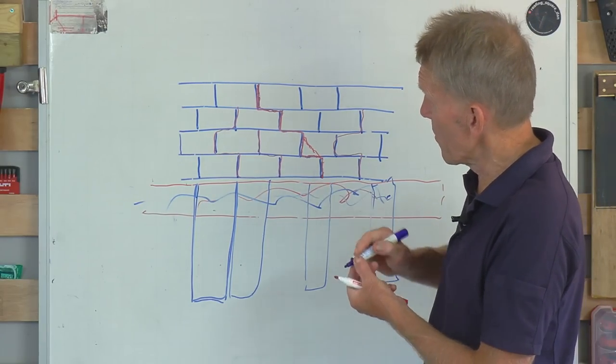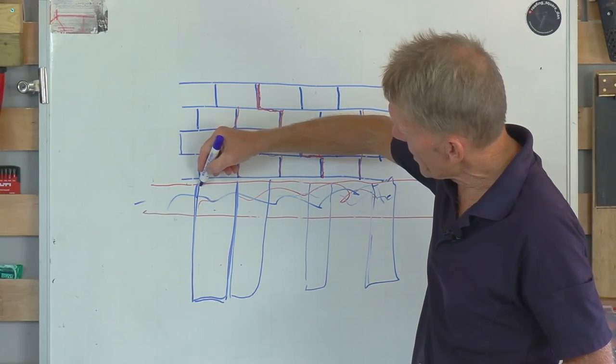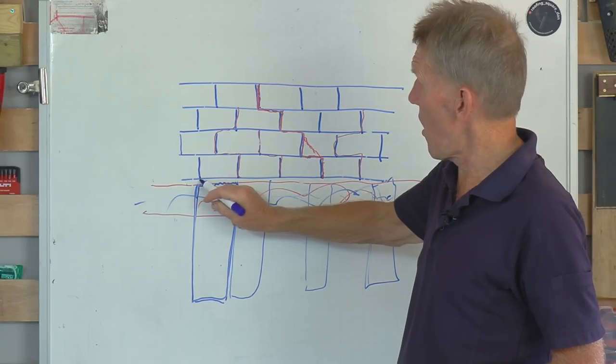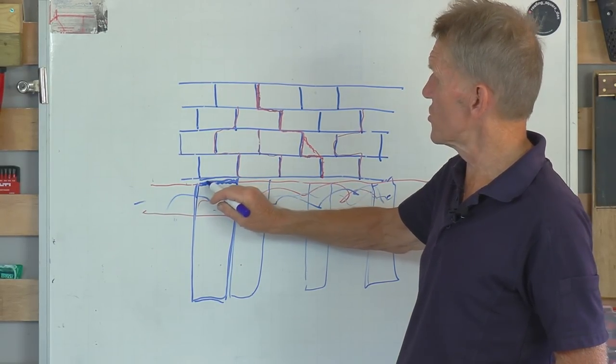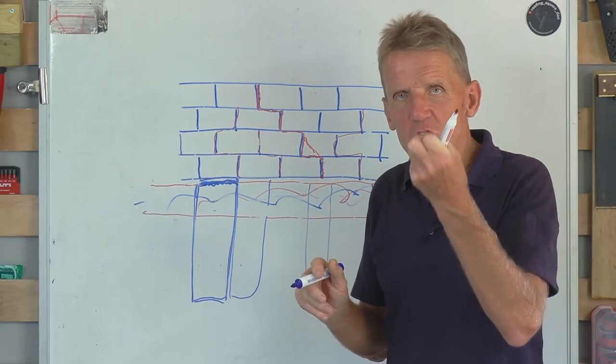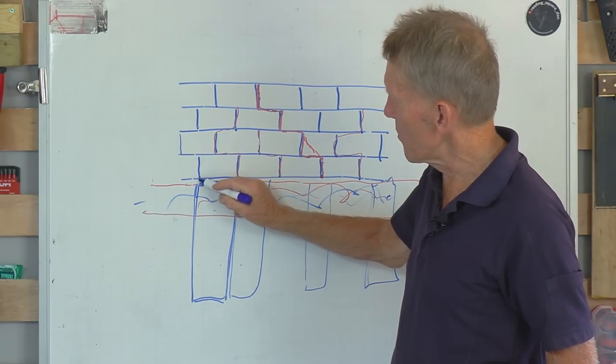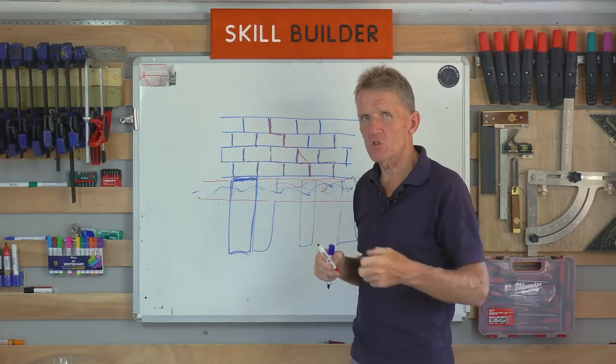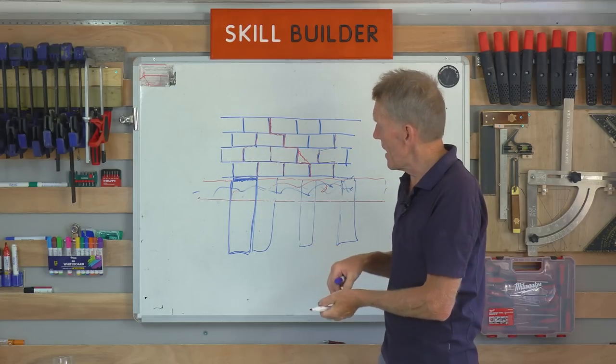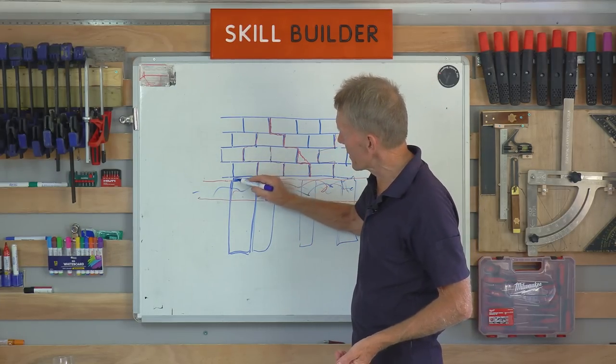Now, very, very important, by the way, is you don't bring this up to the top here. You don't want it hard up against that brick. You want to leave a gap. You stop it short, and that last bit, you dry pack with a very strong, dryish sand of cement. It's hardly got any moisture in it at all. You ram it in there, and that fills that gap up, that last bit.